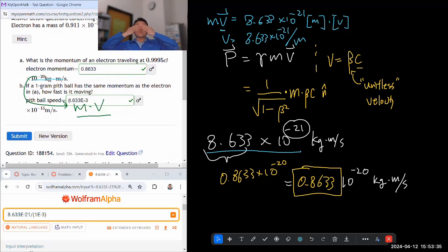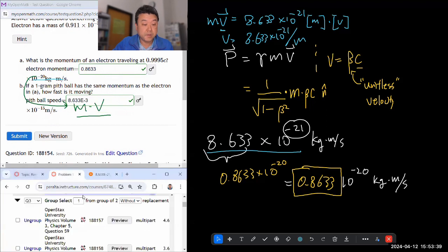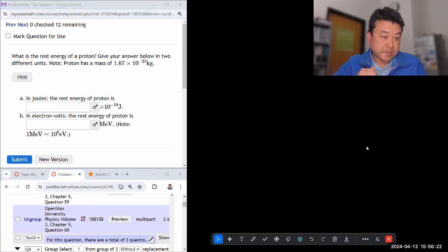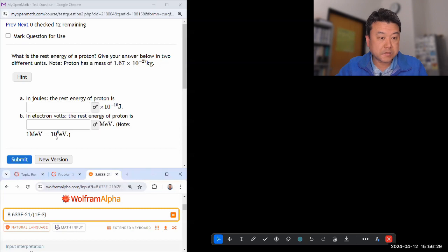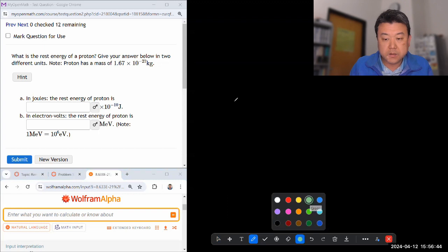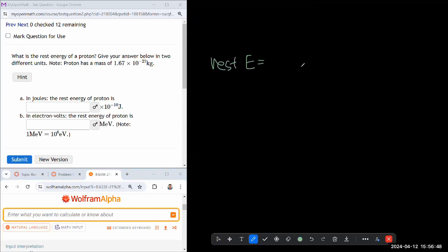So we are switching over to the fourth question, which is the problem set 3-2. So this is the last of the group of the four questions. And this question asks, what is the rest energy of a proton? Give your answer in two different units. Proton has mass of that. So rest energy of anything, you have this formula. Rest energy is equal to mc squared. By the way, when people say E is equal to mc squared, that bothers me. Because E is equal to gamma mc squared. That's the relativistic energy formula. Anyways, rest energy is equal to mc squared.